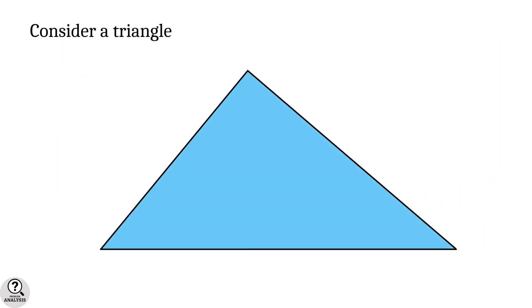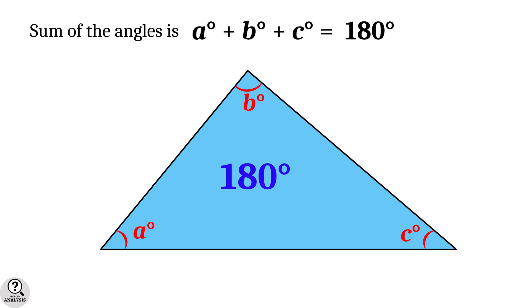Consider a triangle with angles denoted as A degree, B degree and C degree. Then the sum of the angles is always 180 degree. Whatever the values of A, B and C, the sum is 180 degree.